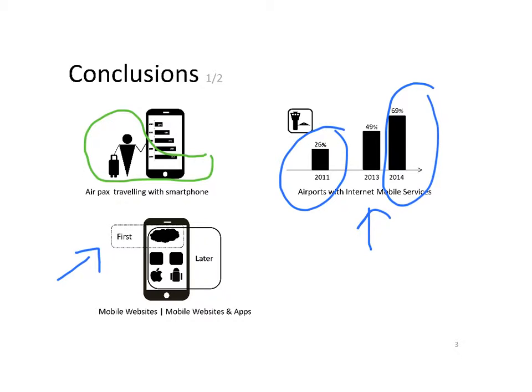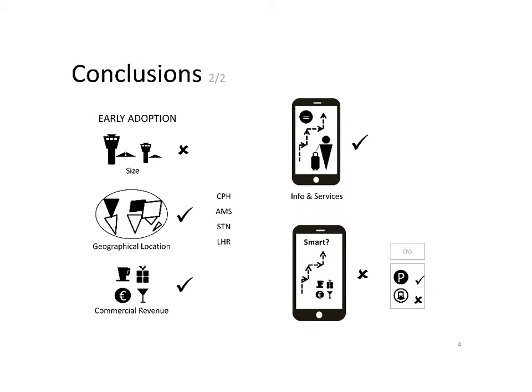But more recently, on top of the mobile websites, they are providing mobile applications, mainly on Apple iOS and Android systems. When we were looking for variables which tried to explain which were the airports first adopting these new services, we found the following things. Airport size doesn't seem to be related to early adoption. However, geographical location and commercial revenue seem to be related.